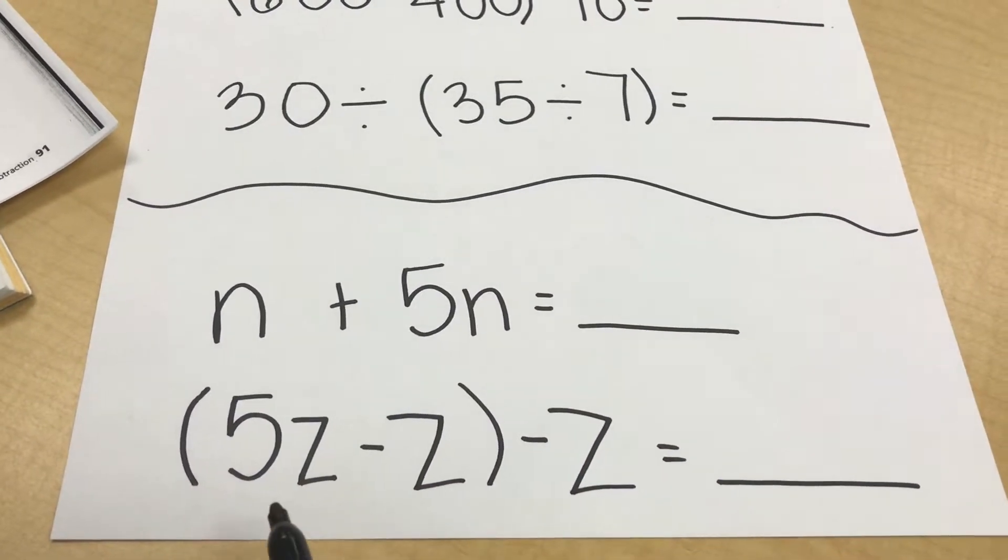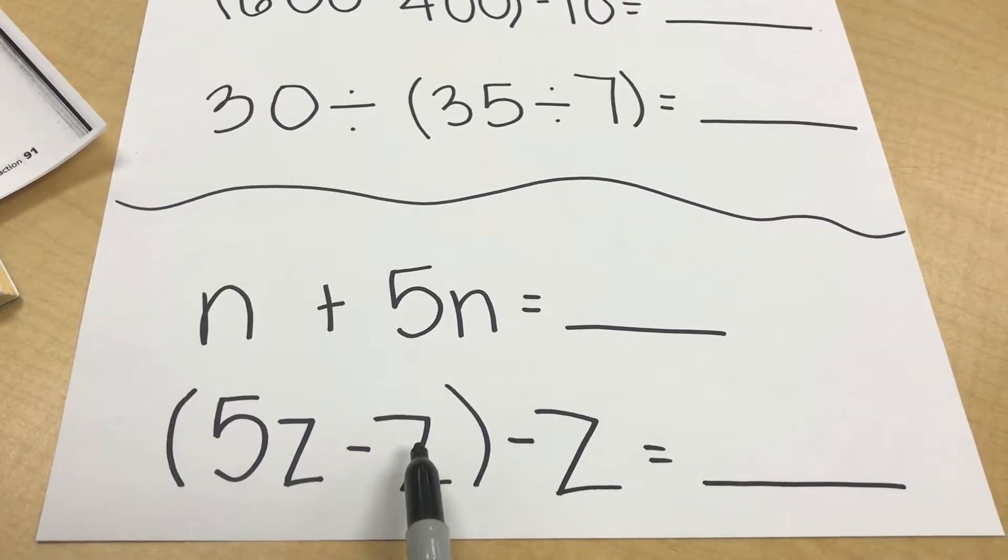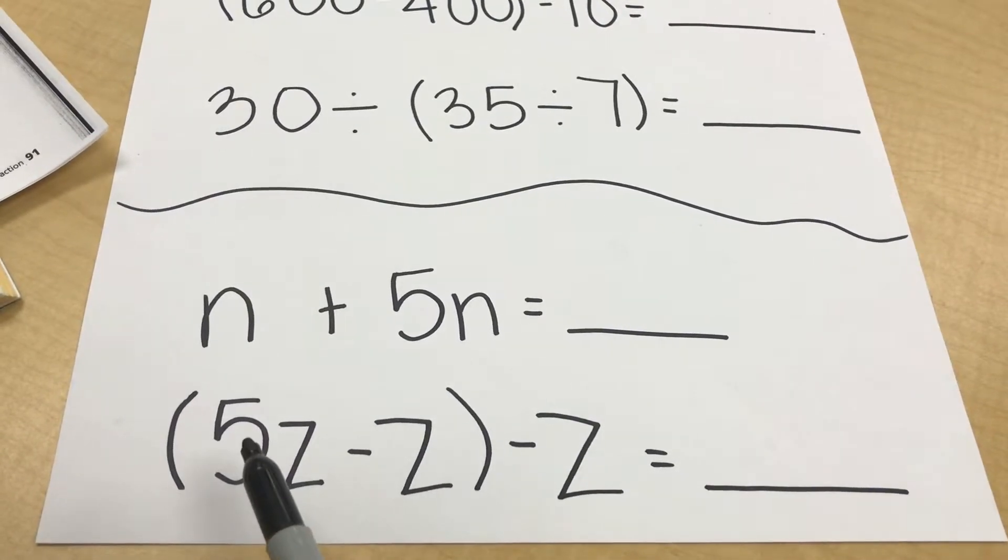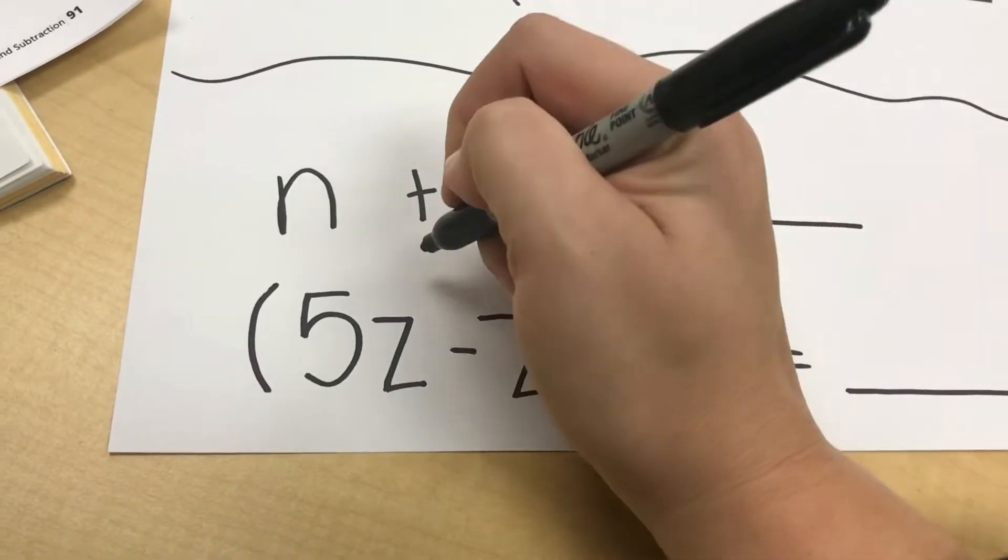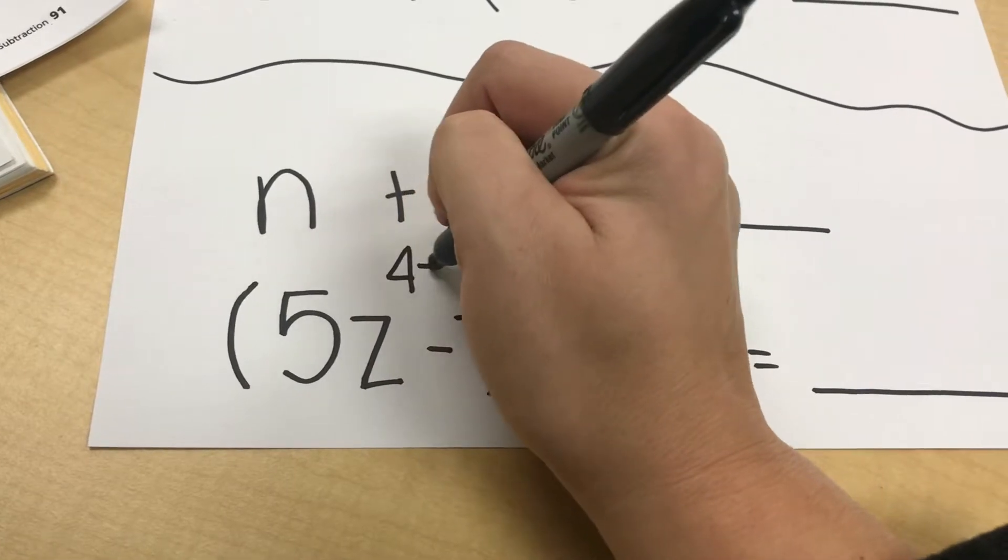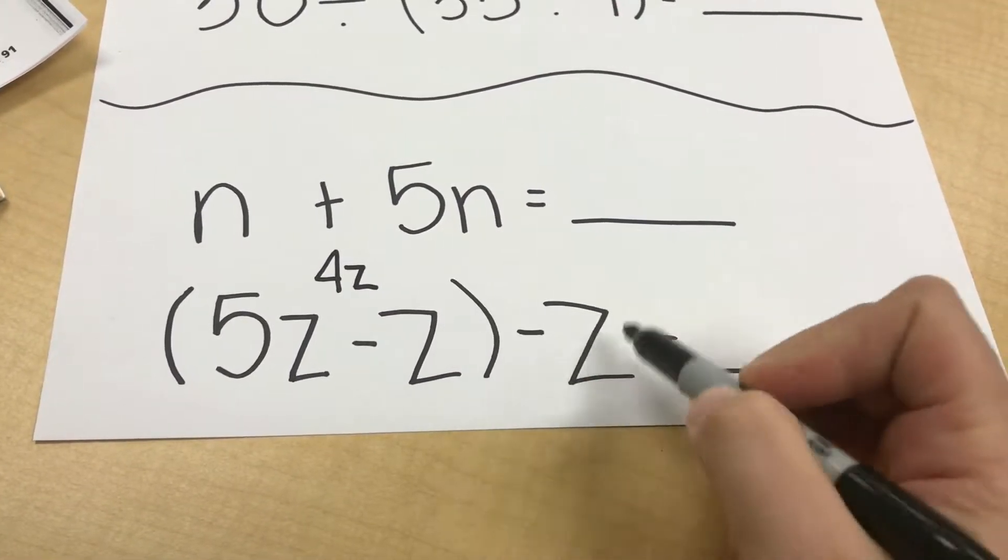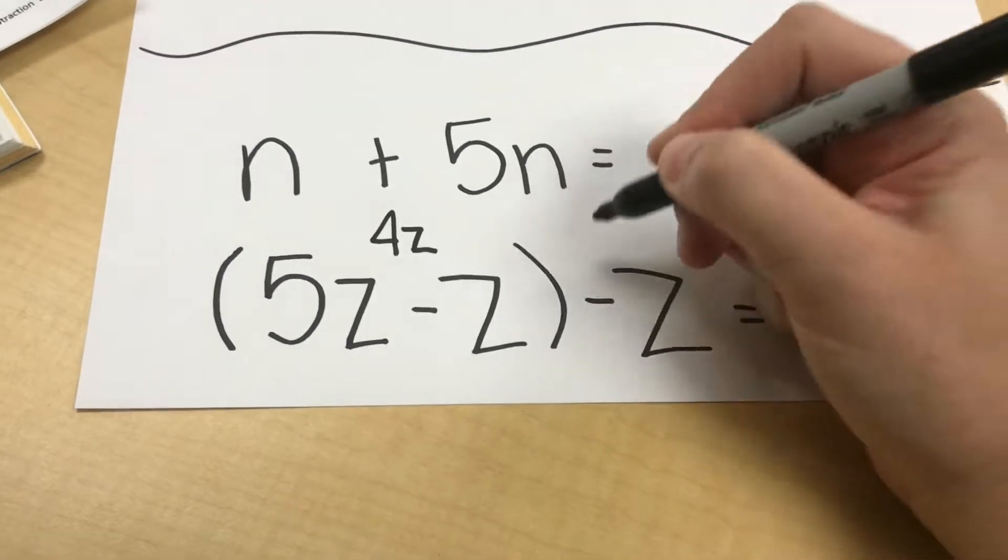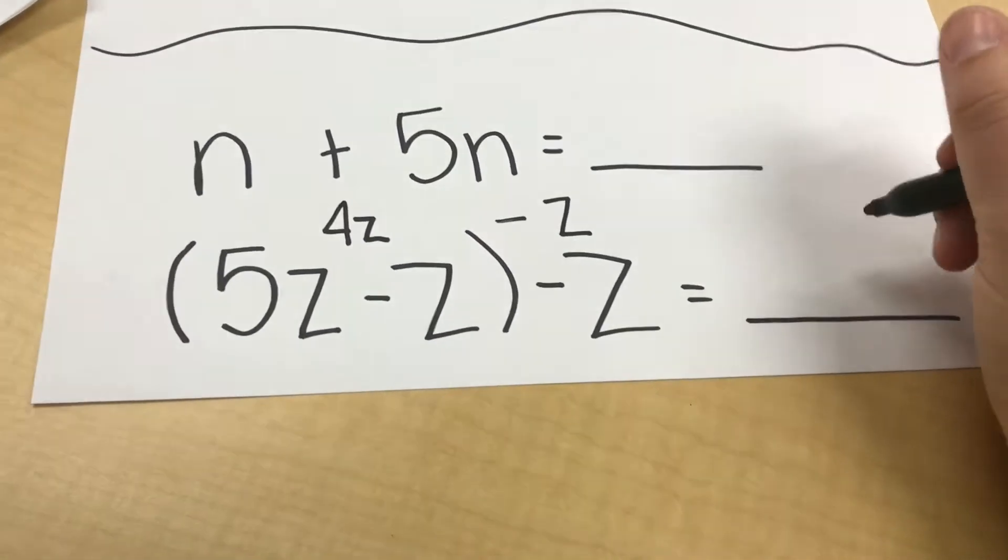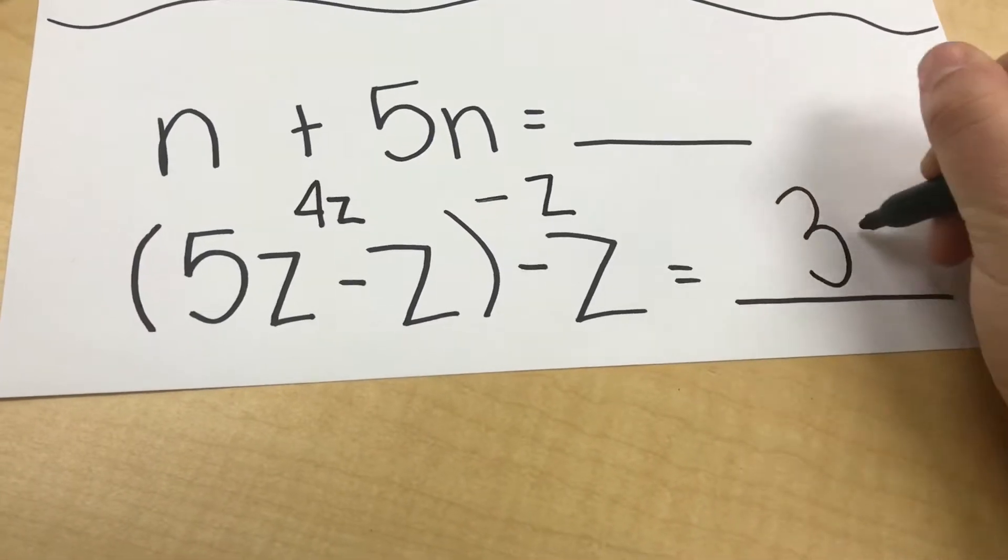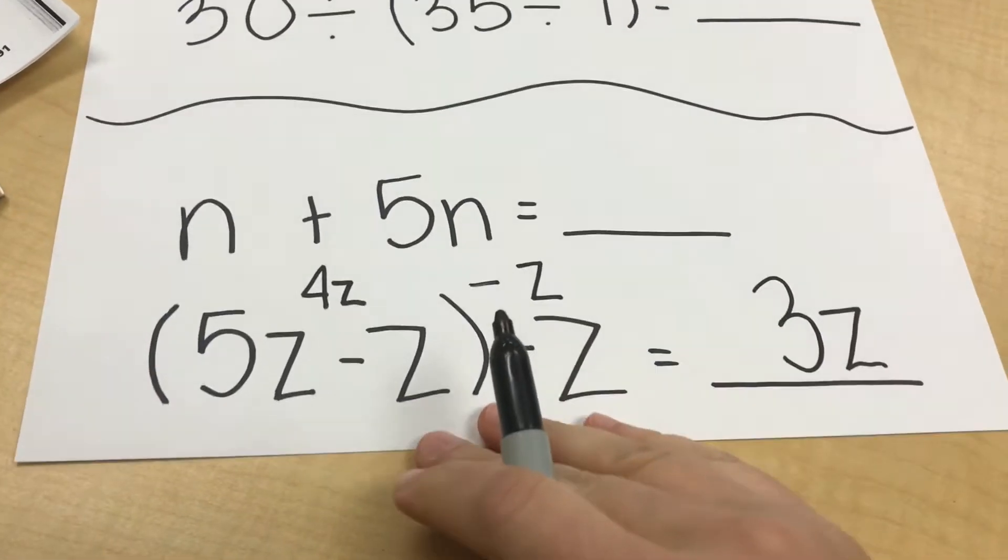Our first problem is 5Z minus Z. So if this is a single Z and these are 5Zs, we are going to be taking one away, which would leave us with 4Z. Once we are done inside the parentheses, we can work outside now. So we have 4Z minus a single Z, and that would give us 3Z. These expressions are not to be solved, merely to be simplified.